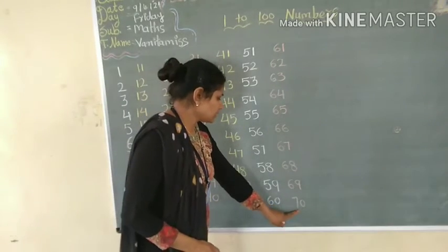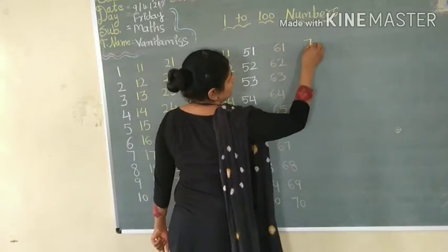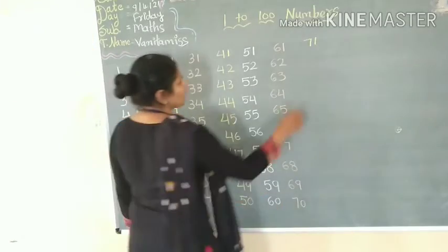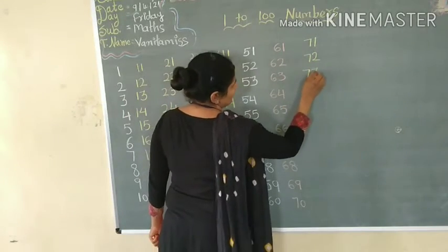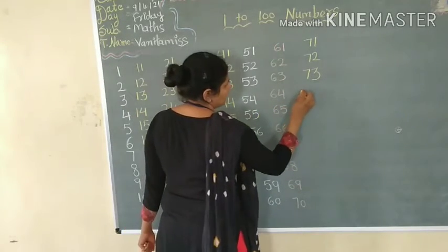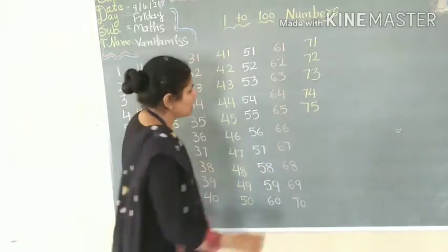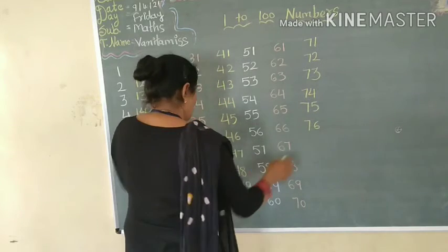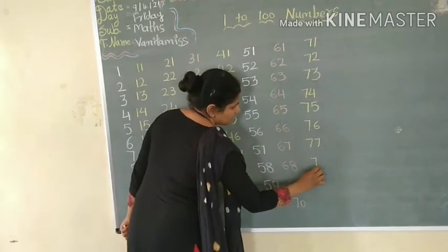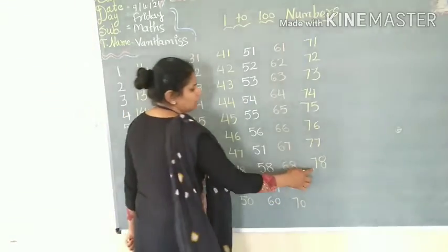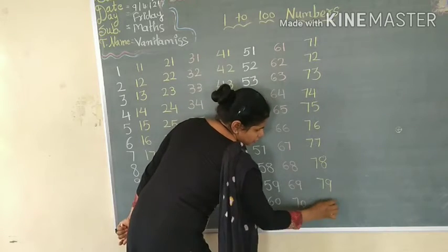Now after 70, which number comes? 71. After 71 is 72. After 72 is 73. After 73 is 74. And the next number is 75. After 75 is 76. After 76 is 77. And after 77, which number comes? 78. After 78 is 79. And after 79 is 80.